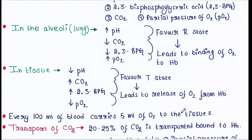Next, we will see what happens in the tissue. In tissue, the pH is low, the CO2 concentration is high, the concentration of 2,3-BPG is high, and the partial pressure of oxygen is low. These all favor the T state, which leads to the release of oxygen from hemoglobin.